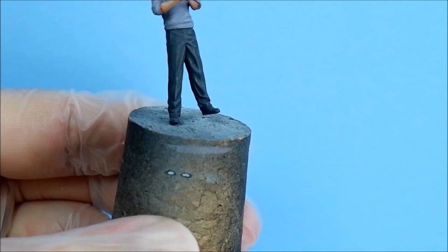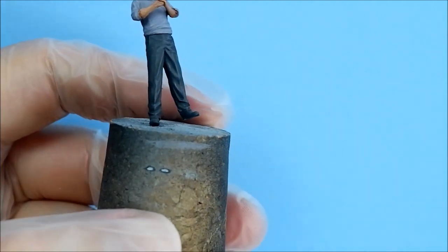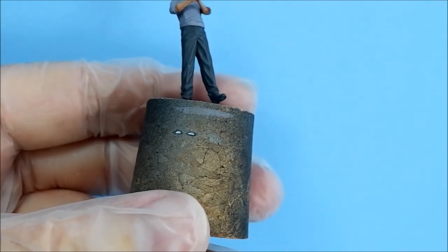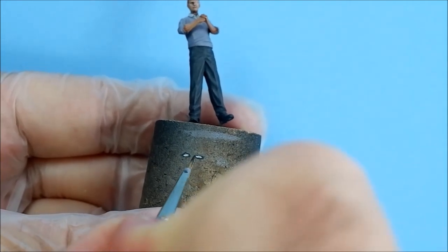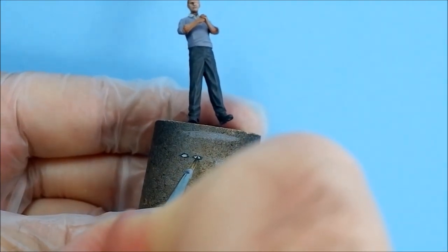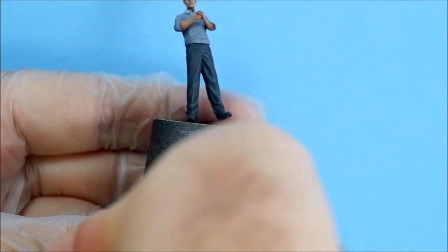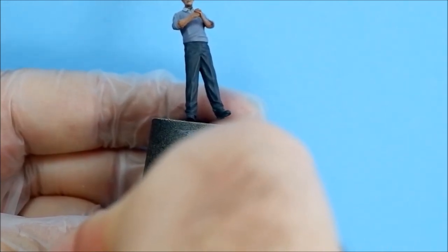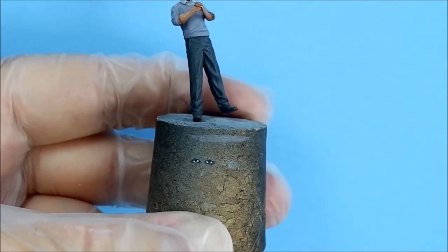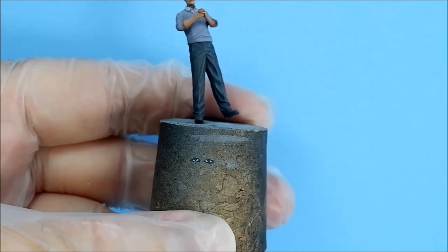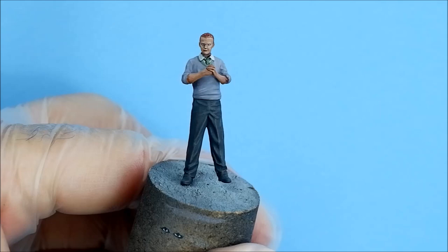And then when you're happy with that and it dries, you get your black or dark blue or whatever colour you want, and again tip of the brush and I'll go towards the top and pull it down. And you should get some nice eyes then. Okay. Okay so that's the eyes done.